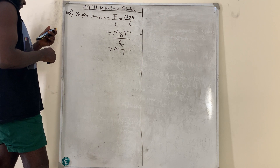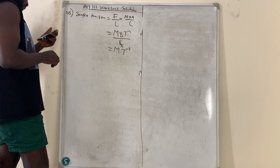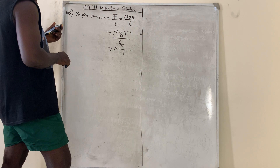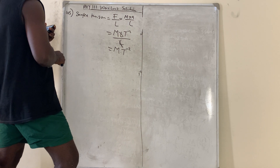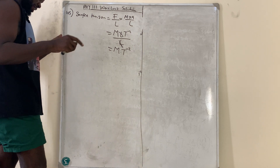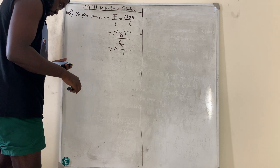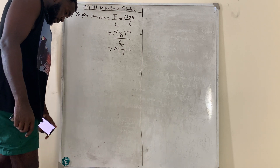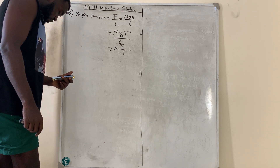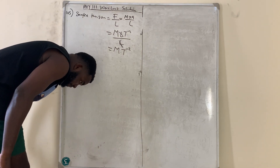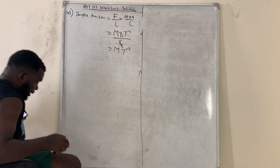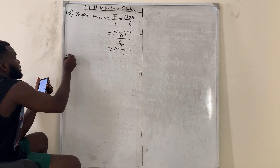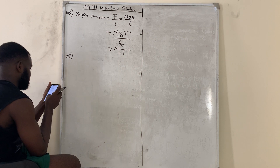Question number 106 is about a particle possessing escape velocity. You can browse that and find the answer yourself. Moving on to question number 107 and 108.